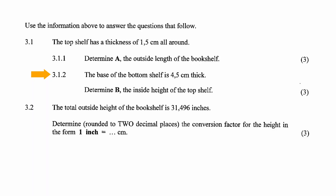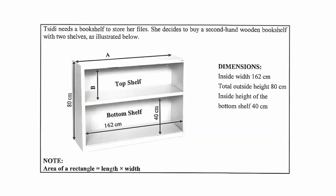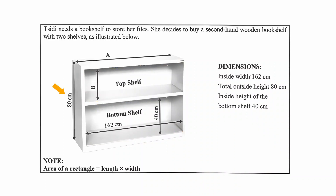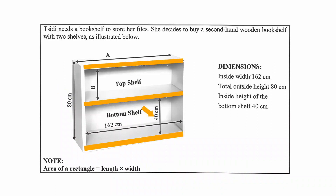In question 3.1.2, it is stated that the base of the bottom shelf is 4.5 centimeters thick. We have to determine B, the inside height of the top shelf. As discussed earlier, dimension B does not equal 40 centimeters. It depends on the thickness of the wood of the top shelf, the base of the top shelf, the height of the bottom shelf, the base of the bottom shelf, and the outside height of the whole bookshelf.